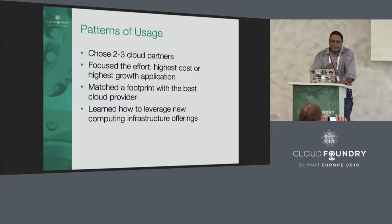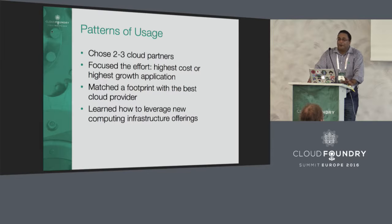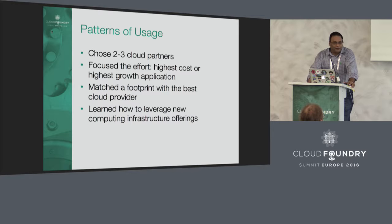The pattern of usage we're seeing with customers doing multi-cloud: they're choosing two to three cloud partners — not one, because that's lock-in, not five, because that's too complicated. They're focusing efforts on highest cost or highest growth areas, trying to fit the workload to the cloud service. And they're learning how to leverage new computing infrastructure offerings like the pre-emptible VMs.